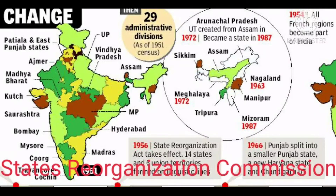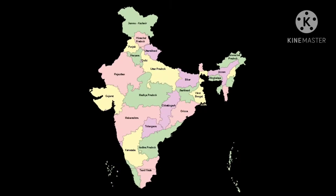The States Reorganization Commission, i.e. SRC, was constituted in 1953 for the reorganization of states' boundaries along linguistic lines. In 1955, after nearly 2 years of study, the commission proposed 16 states and 3 Union territories along linguistic divisions.